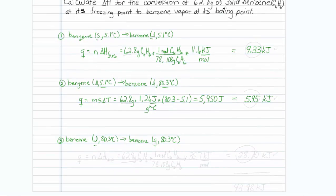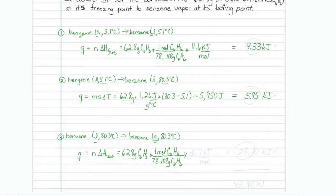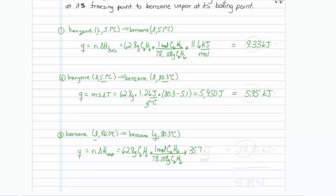The last step is another phase change — going from liquid to gas. Delta H for a phase change equals n times the heat of vaporization. So we take 62.8 grams of benzene, divide by the molar mass of 78.108 grams per mole, and multiply by the heat of vaporization of 35.7 kilojoules per mole. That gives us 28.70 kilojoules.